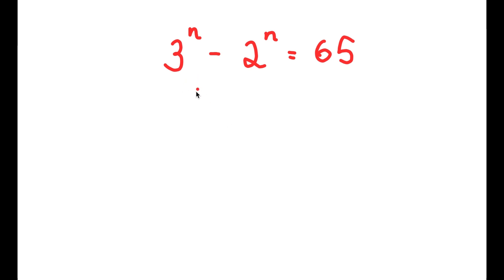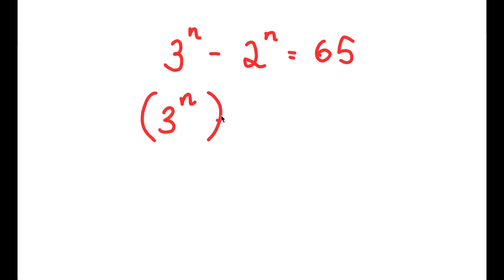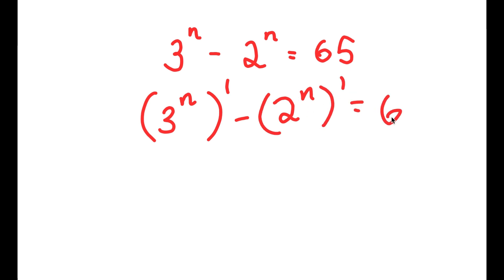In this problem, I have 3 to the power of n minus 2 to the power of n is equal to 65. To solve this, I'm going to start by rewriting 3 to the power of n as 3 to the power of n to the power of 1, and I have minus 2 to the power of n to the power of 1 is equal to 65.